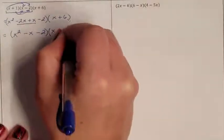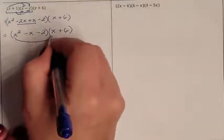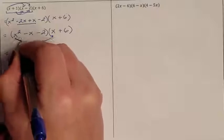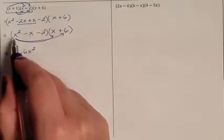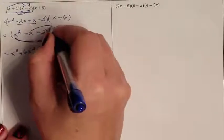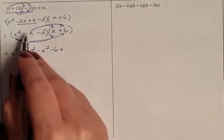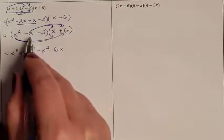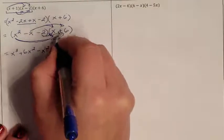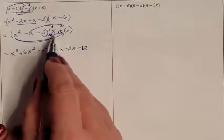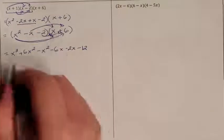Now we multiply this result by the second parenthesis. x squared times x is x to the third. x squared times 6 is positive 6x squared. The x squared is done. Negative x times x is negative x squared. Negative x times 6 is negative 6x. Negative x is done. Negative 2 times x is negative 2x. Negative 2 times 6 is negative 12. The negative 2 has multiplied to everybody in the second, so we're done with everyone in the first.